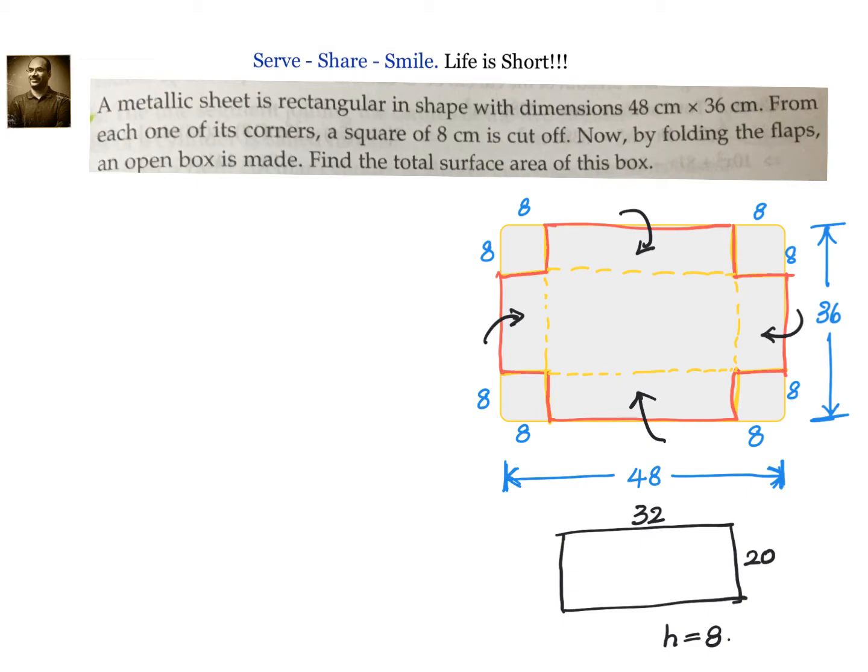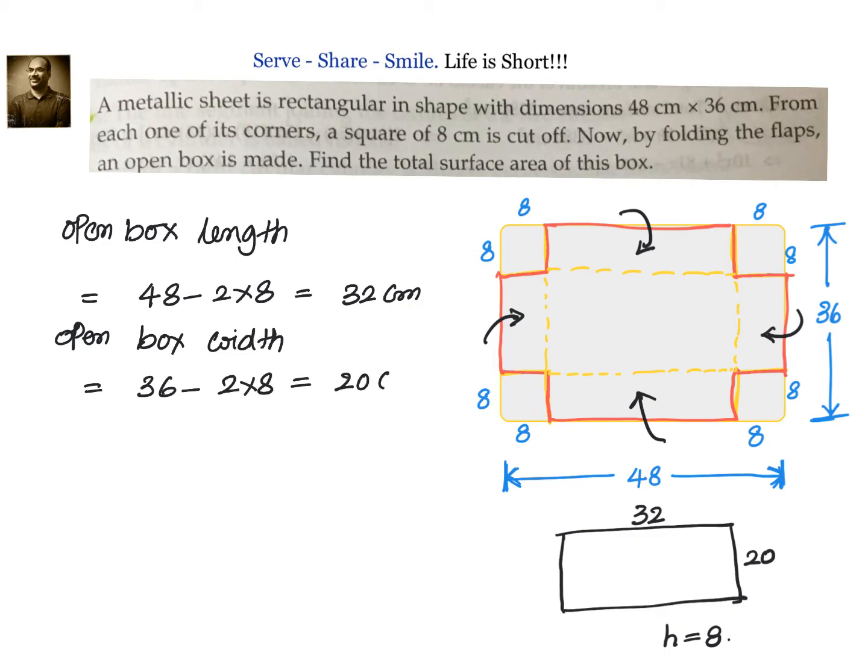So let us write down the steps for that. After that we can do TSA easily. So first step we will write down. Open box length is equals to 48 minus 2 into 8. 36 minus 16 that is 20 centimeter.